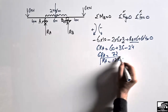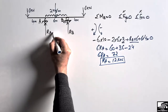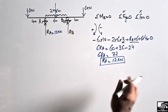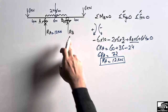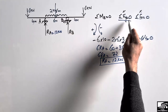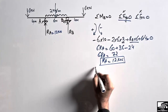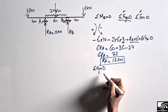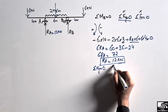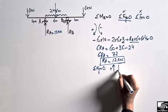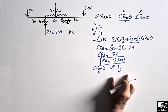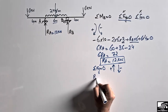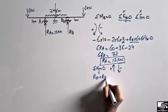So the support reaction at A is 12 kilonewtons. Now to find RB, we use the summation of vertical forces equals zero, with upward forces taken as positive and downward forces as negative. RA and RB are acting upward, so they are positive.